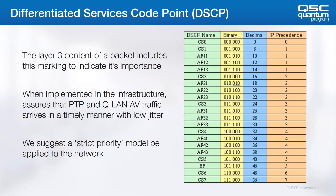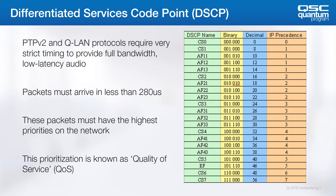Note that DSCP values have a name and a decimal value. Different switches use different methods to configure prioritization, and a table like this can be very useful in making sure you know which name maps to the decimal value. PTP-V2 and QLAN are protocols that require both low latency and jitter to be successfully implemented on a given network. For example, QLAN packets must arrive in less than 280 microseconds to be considered on time. We recommend that PTP-V2 and QLAN audio packets are the highest priorities on the network. The feature set required on the switch to allow this prioritization is called Quality of Service, or QoS.